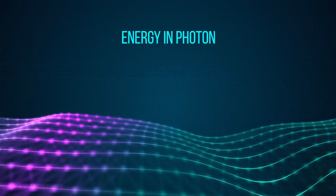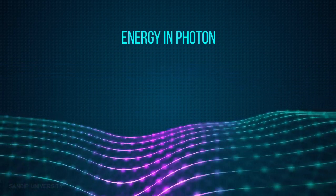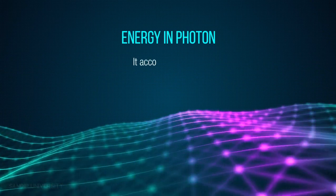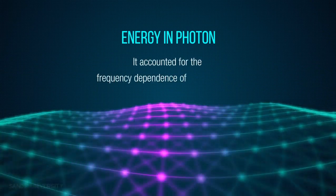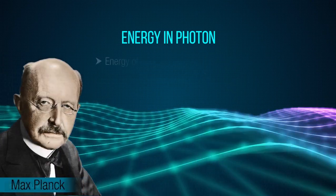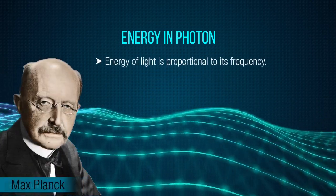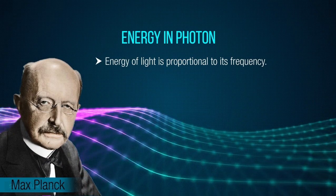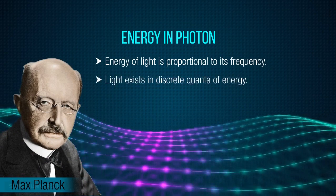Energy in photon. The benefit of the photon model was that it accounted for the frequency dependence of light's energy. Max Planck showed that the energy of light is proportional to its frequency and also proves that light exists in discrete quanta of energy.